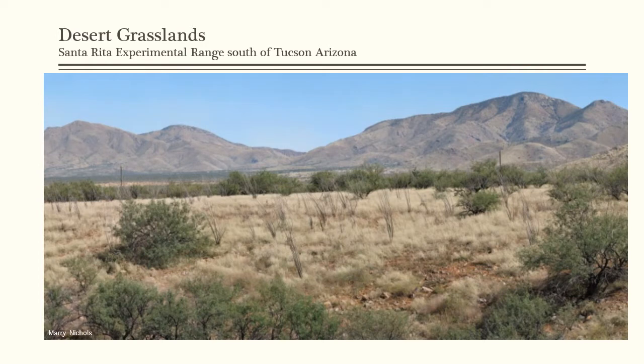There are also grasslands intermixed among those larger succulent shrubs. Here's a picture from the Santa Rita Experimental Range south of Tucson, Arizona — you can see quite a bit of grass between those shrubs, making it actually pretty good for grazing. There are active cattle ranches in this area. The shrubs are mostly mesquite, and fire is a very important management tool to suppress mesquite and allow grasses to grow, creating this mix of grasslands and shrublands seen in this picture.